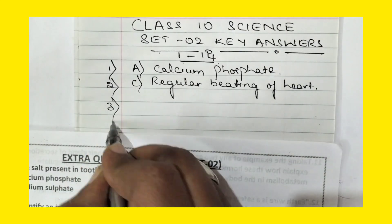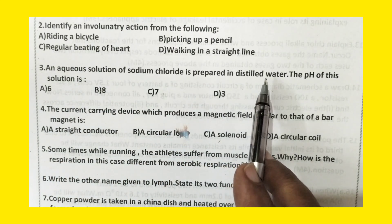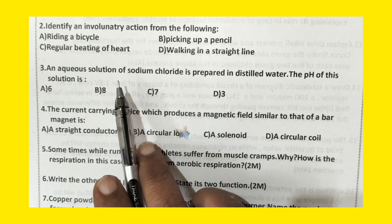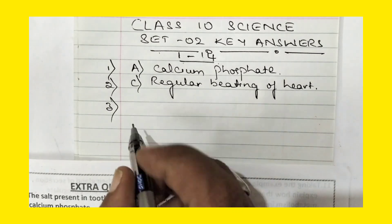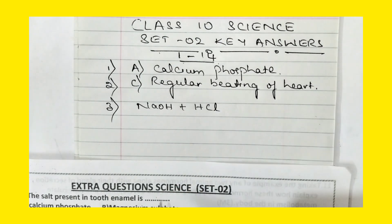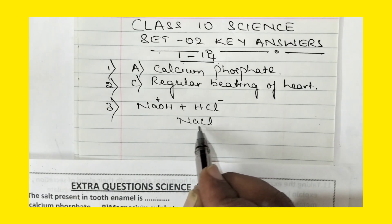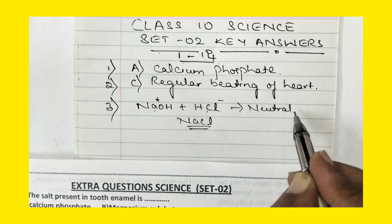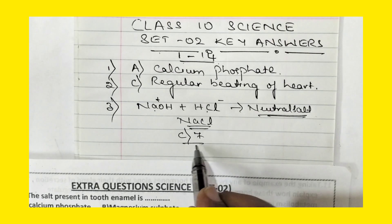Now let us move for question number 3. They have given: an aqueous solution of sodium chloride is prepared in distilled water. The pH of this solution is — sodium chloride when added to water will become a neutral solution, because sodium chloride is formed from strong base sodium hydroxide and strong acid hydrochloric acid. Strong base and strong acid always give a neutral salt. Therefore, the pH of the neutral salt is 7. The answer is option C, that is 7.